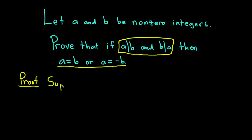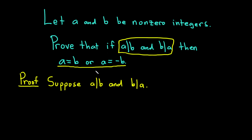Suppose that a divides b and b divides a. Now we somehow have to show that a is equal to b or a is equal to negative b. In order to get to this conclusion, we should use our hypothesis. So let's go ahead and write down what it means for a to divide b.